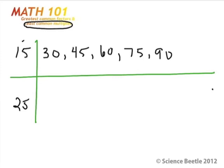Let's go ahead and try the 25 now. 25 times 1 is 25, 25 times 2 is 50, 25 times 3 is 75, 25 times 4 is 100. We'll stop there. Now we look for the numbers common to both. Looking at the 15s, the only number I see that's also on the bottom is 75.